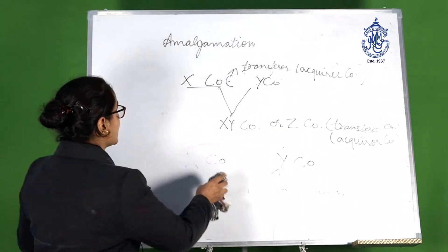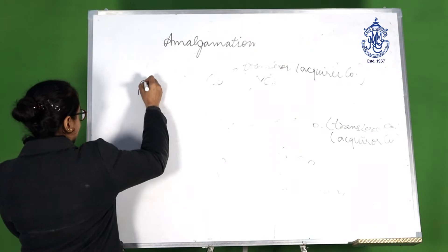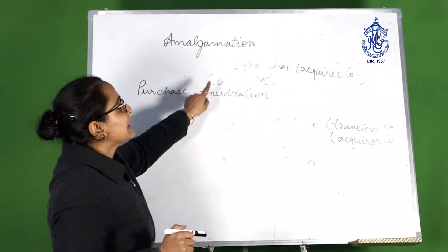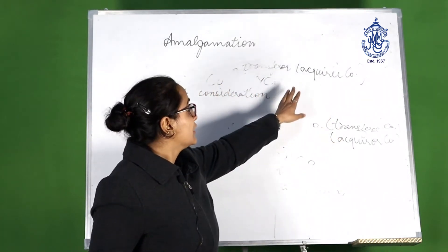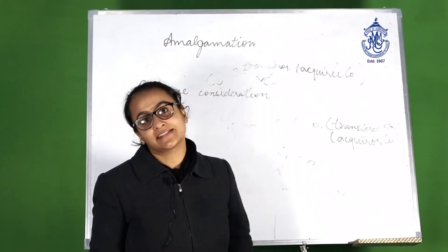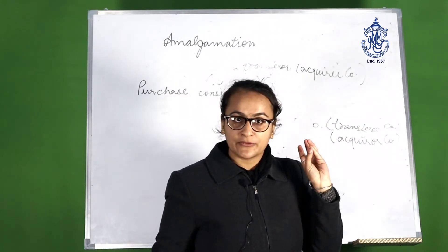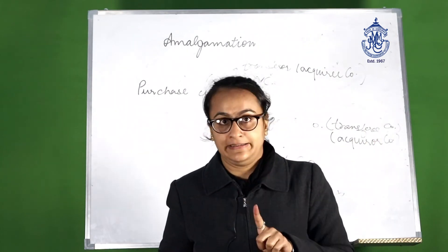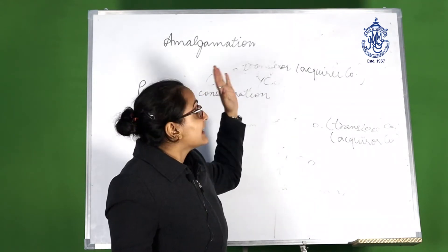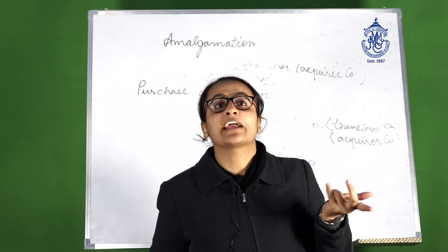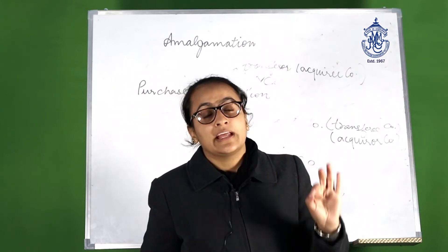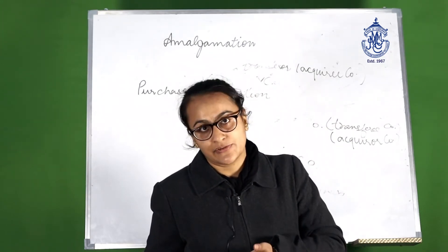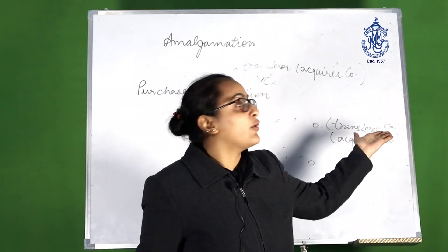The most important concept is purchase consideration. Any amount in any form payable to the acquiree company by the acquirer company is purchase consideration. It can be paid in the form of shares in the acquirer company, in the form of cash, securities, or any other kind. Importantly, purchase consideration is only paid to the shareholders of the acquiree company and not to debenture holders. Any amount payable to debenture holders, trade creditors, or trade liabilities is not purchase consideration — it is simply a discharge of liability by the acquirer company.